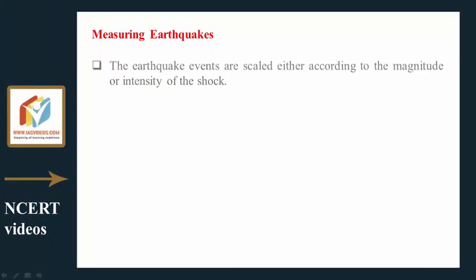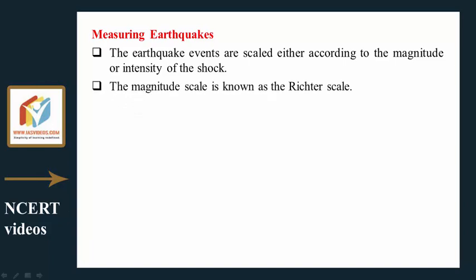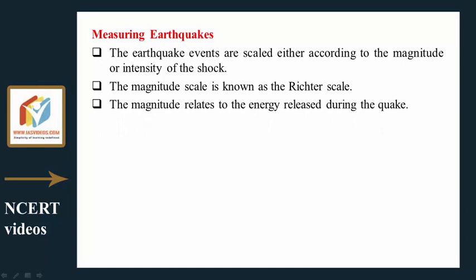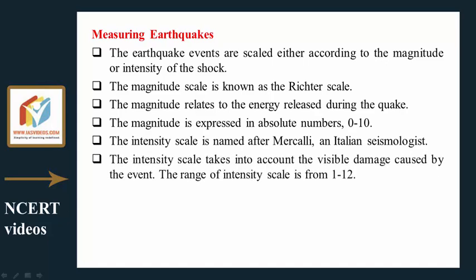Measuring earthquakes: Earthquake events are scaled either according to magnitude or intensity of the shock. The magnitude scale is known as the Richter scale, and magnitude relates to the energy released during the quake, expressed in absolute numbers 0–10. The intensity scale is named after Mercalli, an Italian seismologist. The intensity scale takes into account the visible damage caused by the event, and its range is from 1–12.